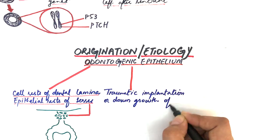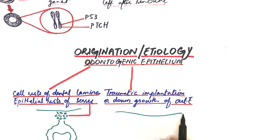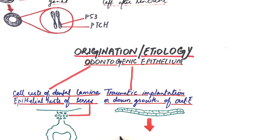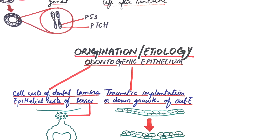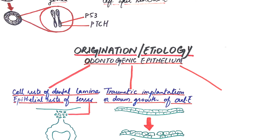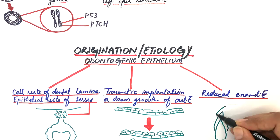Some studies support their development from traumatic implantation or downgrowth of the basal cell layer of the surface epithelium, or from the reduced enamel epithelium of the dental follicle.